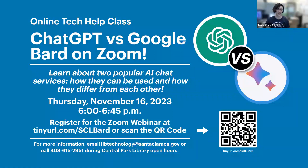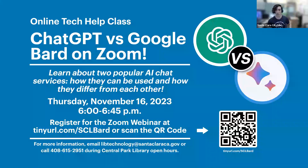Hello everybody, and welcome to the next technology class here at the Santa Clara City Library. Today we're going to be talking about ChatGPT and Google's BARD, doing a comparison between them and showing you how you can use them and what they're good for. My name is John and I'm going to be walking you through this class today. I'm an employee in the Technology Center here at the library. This is going to be a 35-minute program.